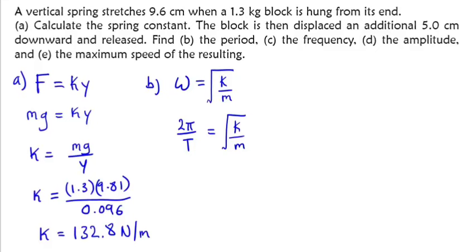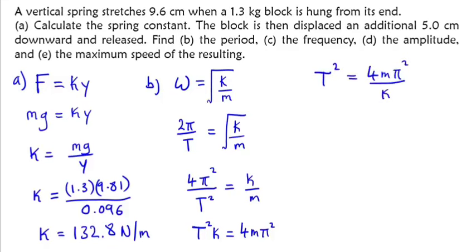If we square both sides, we have 4π²/T² = k/m. Let's make T the subject of the formula. If we cross multiply, T²k = 4mπ². So period T² = 4mπ²/k. We introduce a root to both sides, so period T = √(4mπ²/k).